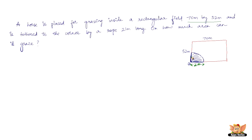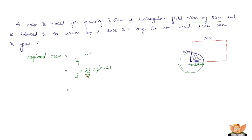It is definitely a quadrant — a quarter part of a circle. We can consider the 21 m rope as the radius. If you complete the shape, it becomes a full circle. So find the area of the entire circle of radius 21 m and divide by 4. The required area is 1/4 × π r² = 1/4 × 22/7 × 21 × 21. Since 7 goes 3 times into 21, solving gives 693/2 = 346.5 m². The area the horse can graze is 346.5 m².